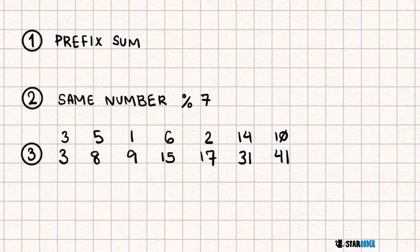For example, in order to find these, then I just have to do 31 minus 9. If I want to find the sum of this, then it's just 9 minus 3. And so prefix sum is able to give us these values.